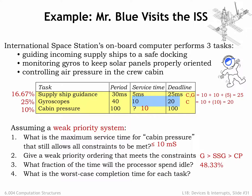G might have to wait for CP to complete — 10ms — then add its own service time of 10ms, for a worst-case completion time of 20ms. CP might have to wait for SSG to finish (5ms), then wait for G to run (10ms), then add its own service time (10ms), for a worst-case completion time of 25ms.